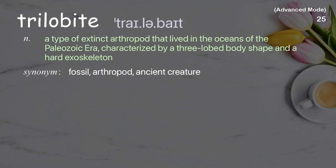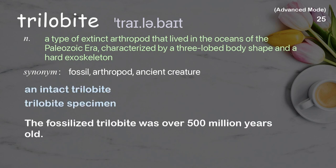Trilobite: A type of extinct arthropod that lived in the oceans of the Paleozoic era, characterized by a three-lobed body shape and a hard exoskeleton. Examples: an intact trilobite, trilobite specimen. The fossilized trilobite was over 500 million years old.